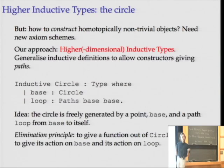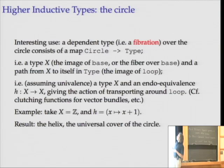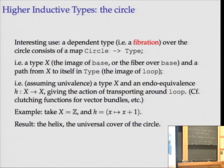How can we use it and see if it really behaves like the circle should? Looking at one example: what is a dependent type over the circle? Dependent types were originally thought of as a family of sets indexed by some set, but if we think of spaces, we think of it as a continuous map into a family of spaces — in semantics one models dependent types as fibrations. Formally in the theory, that's a map from the circle to the universe of types, which by our elimination principle is specified by a type, the image of the base point, and then a path from that type to itself.